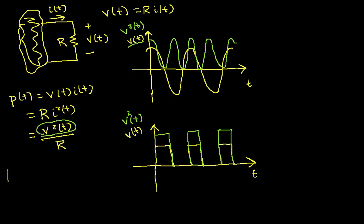The average power — let's write it in red — is going to be the average of the squared voltage divided by R, or equivalently the average of the squared current multiplied by R. So the average power in the sinusoidal case will be some particular value, and in the square wave case, depending on the width and height of the rectangles, it could be a different value.